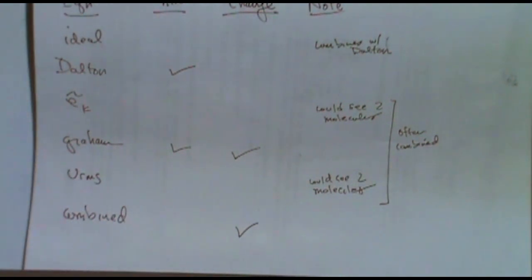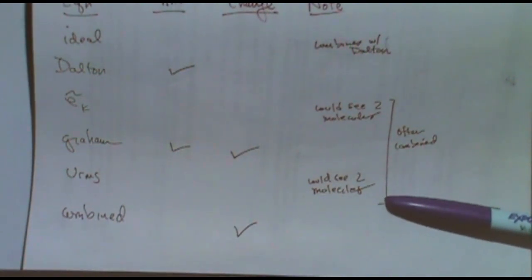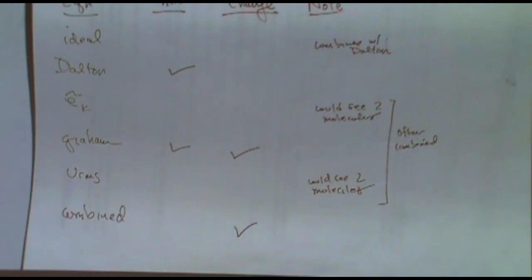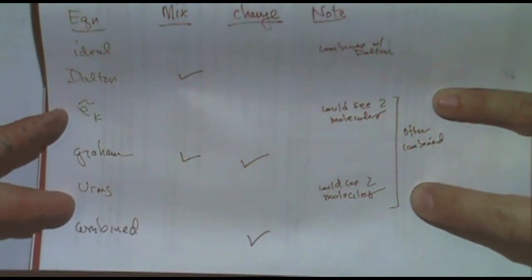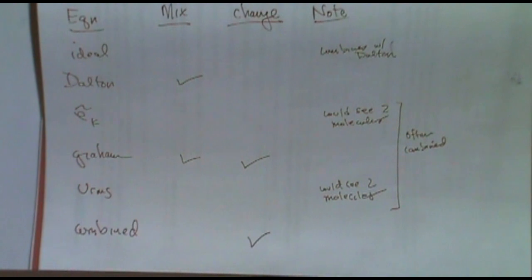A side note: you could see a kinetic energy or root mean square velocity question when you have two molecules, but the question will focus on one of the two molecules - one molecule of interest. Often these two are combined together in one question, where you're asked for kinetic energy and then the root mean square velocity.